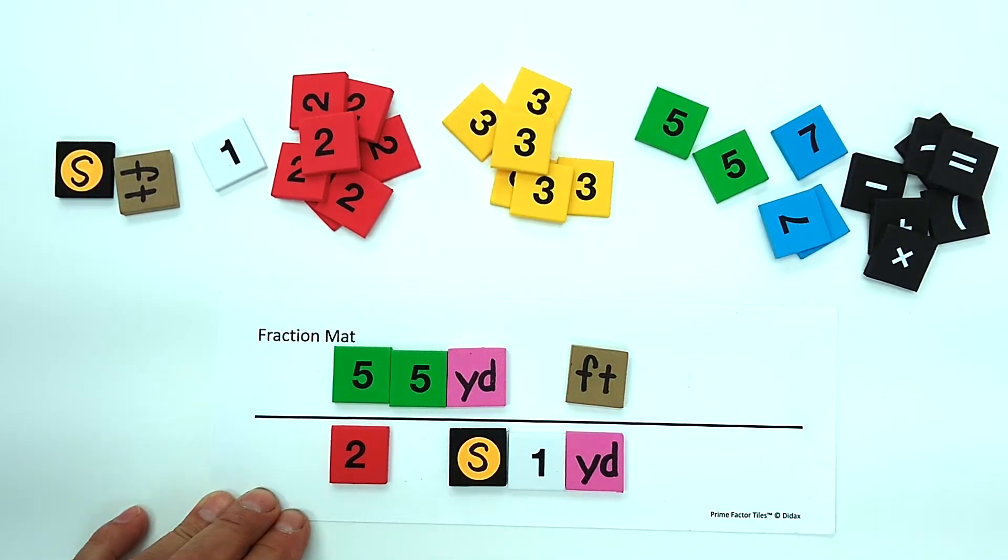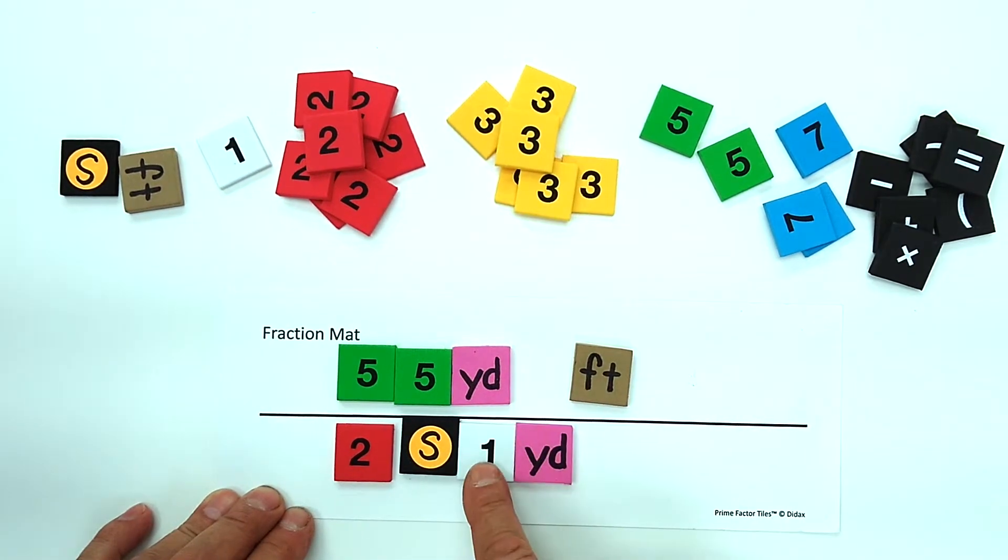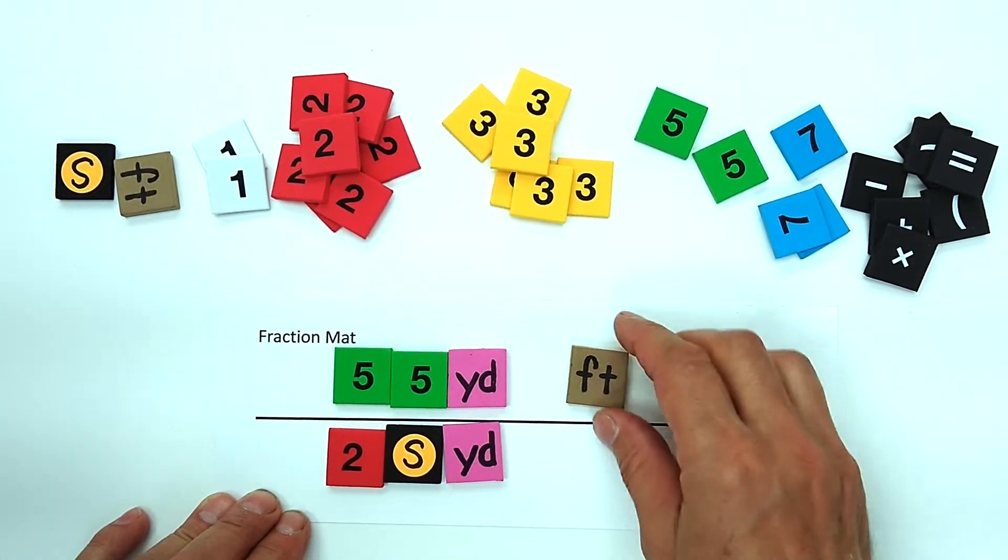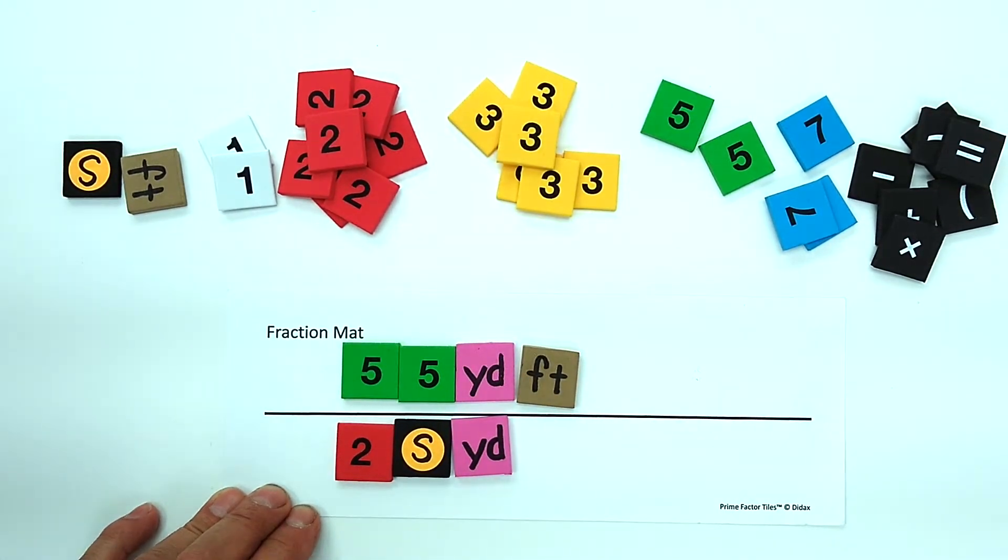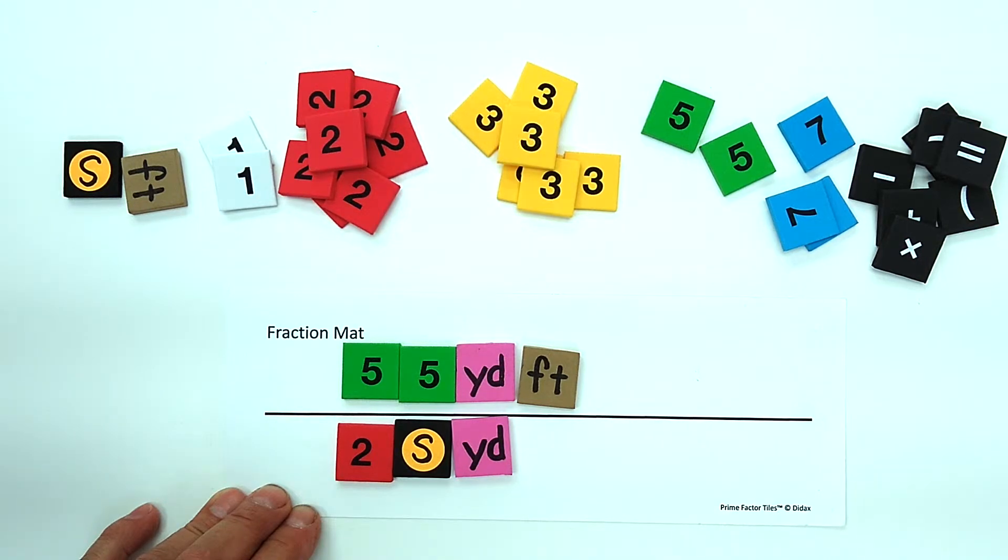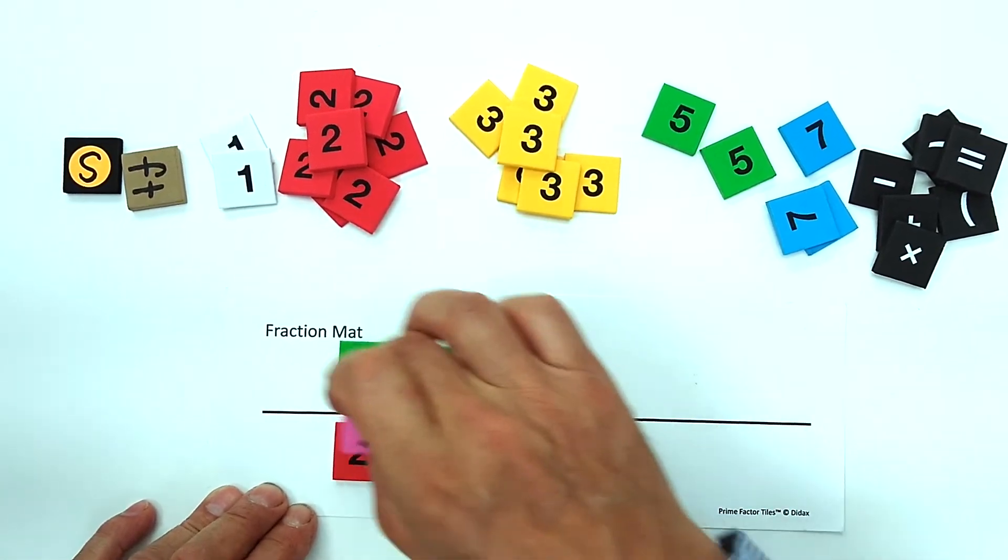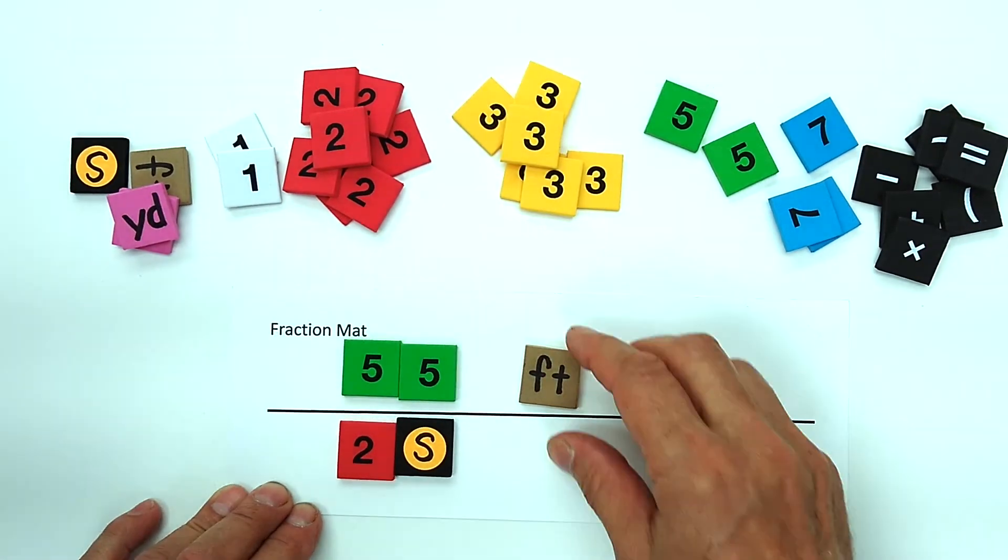We don't need this one on the bottom here; 1 times 2 is just 2. Now you'll notice yards divided by yards—1 yard divided by 1 yard is 1, just like 3 divided by 3 is 1. One times any number is the number itself, and yards are unnecessary.